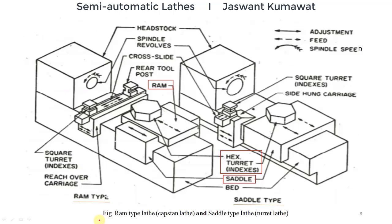This figure shows the capstan lathe and turret lathe. We have discussed that capstan lathe is also known as RAM type lathe while turret lathe is also known as saddle type lathe. The picture on the left side is of capstan lathe and the picture on the right side is of turret lathe. From this figure we can understand the construction of capstan and turret lathes and the difference between them, and how they are different from center lathe.